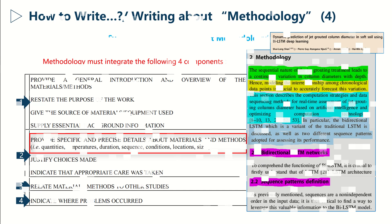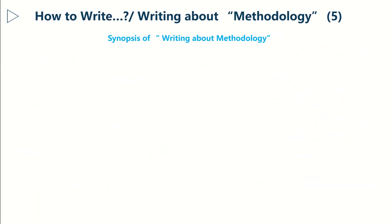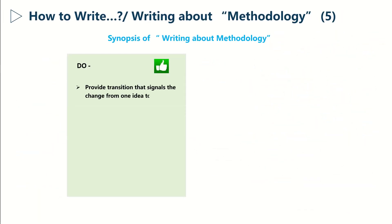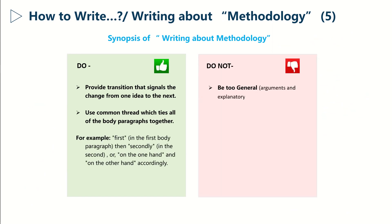Additionally, this is what you should do and should not do when writing about methodology. It is recommended to use transitions that signal the change from one idea to the next. It is also good practice to use common threads which tie all the body paragraphs together.